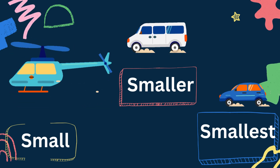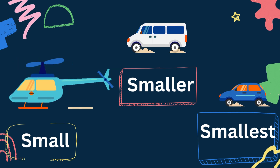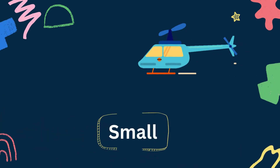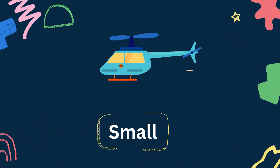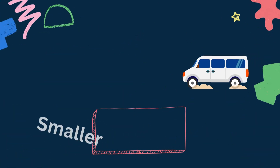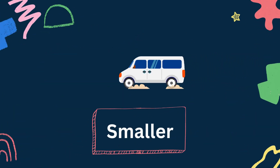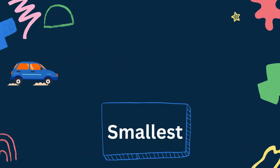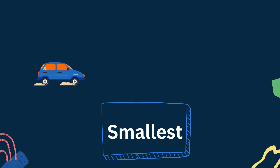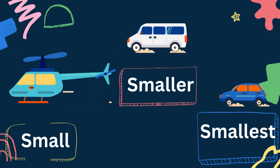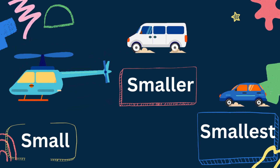Small, smaller, smallest. The first is small, the second one is smaller, and the third one is smallest — smallest means small from all. For example, a car is smallest compared to a helicopter.